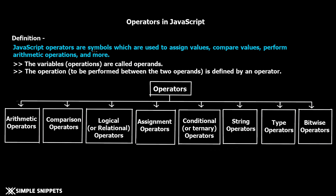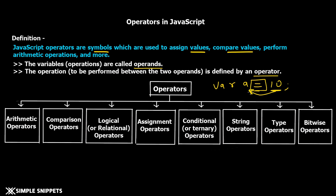JavaScript operators are symbols which are used to assign values, compare values, perform arithmetic operations, and more. Symbols means plus, minus, less than, equal to, greater than, and so on. The variables are called operands, and the operation to be performed is defined by an operator. For example, if we create a variable var a and say equal to 10, this equal to is an assignment operator — it assigns the value 10 and stores it in the variable.